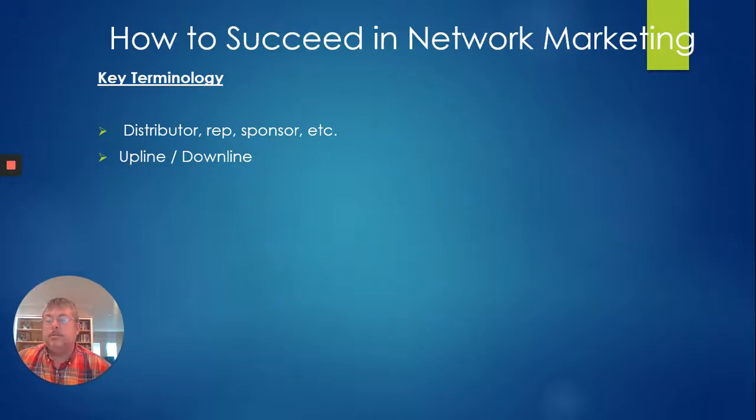Your upline is who enrolled you and who's above them, who's in your direct line of sponsorship. We'll talk a little bit more about what that means later. And then your downline is anybody that you've enrolled and they've enrolled and it's grown. So as your organization grows, that's your downline.